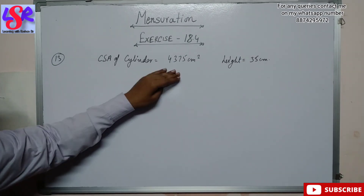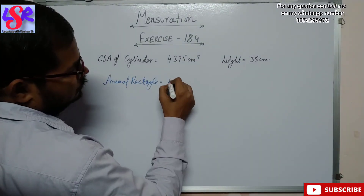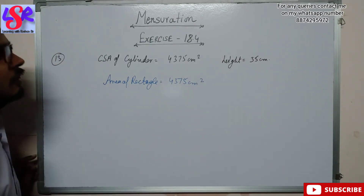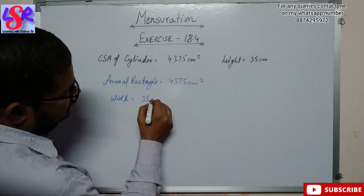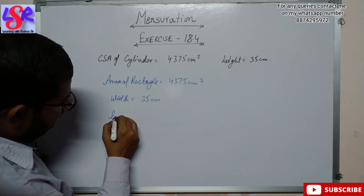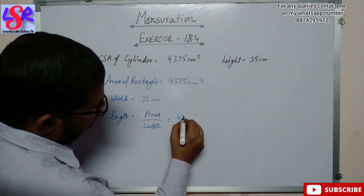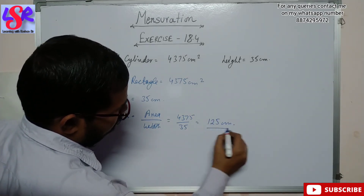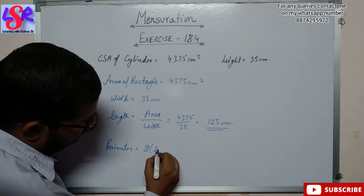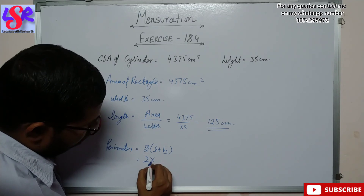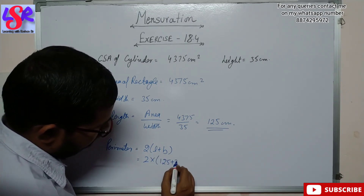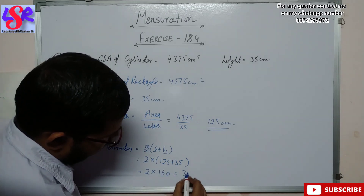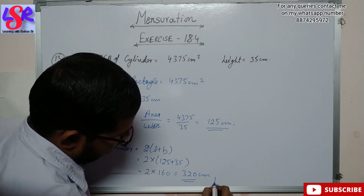The curved surface area of the cylinder equals the area of the rectangle = 4375 square centimeter, with width = 35 centimeter. The length of the rectangular sheet = area ÷ width = 4375 ÷ 35 = 125 centimeter. The perimeter = 2(L + B) = 2 × (125 + 35) = 2 × 160 = 320 centimeter as the answer.